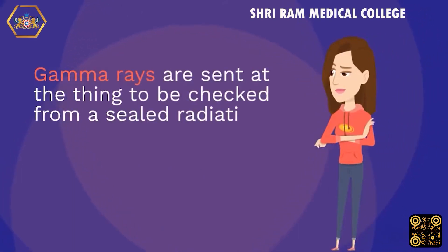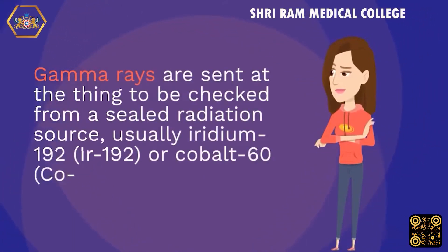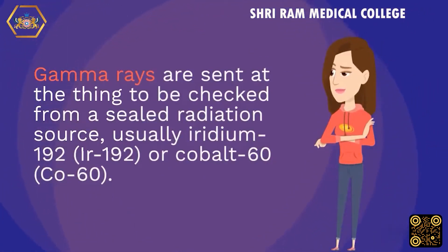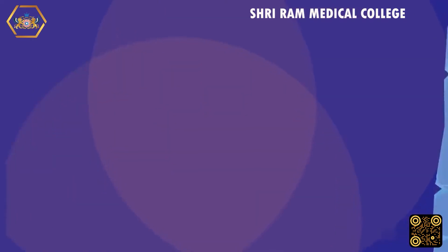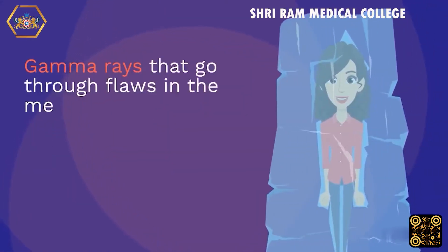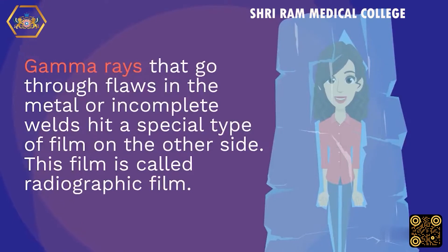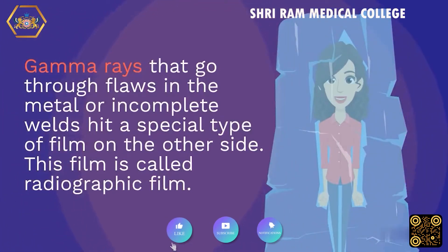Gamma rays are sent at the part to be checked from a field radiation source, usually iridium-192 (Ir-192) or cobalt-60 (Co-60). Gamma rays that go through flaws in the metal or incomplete welds hit a special type of film on the other side. This film is called radiographic film.